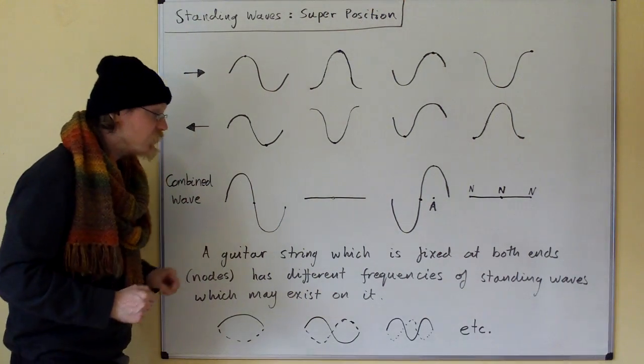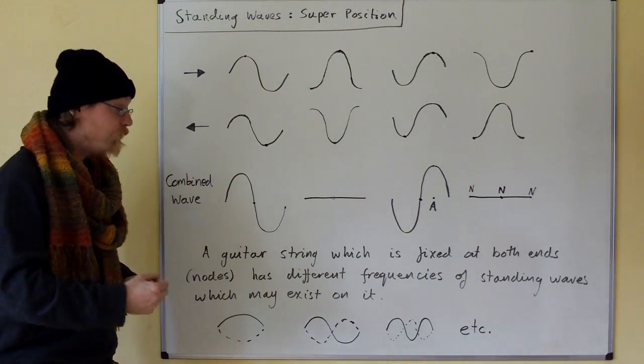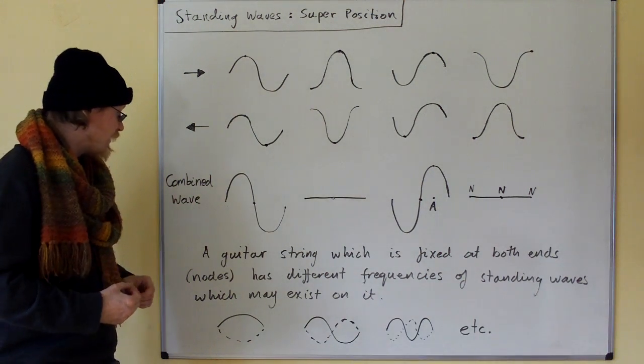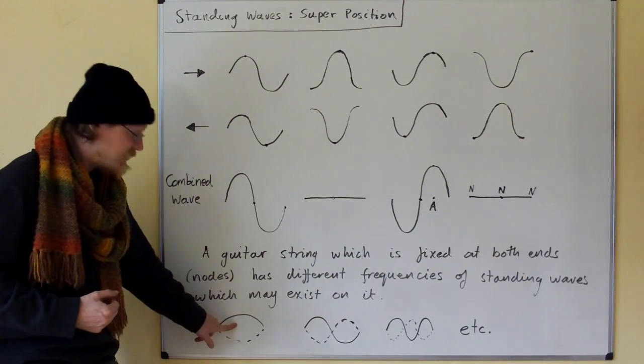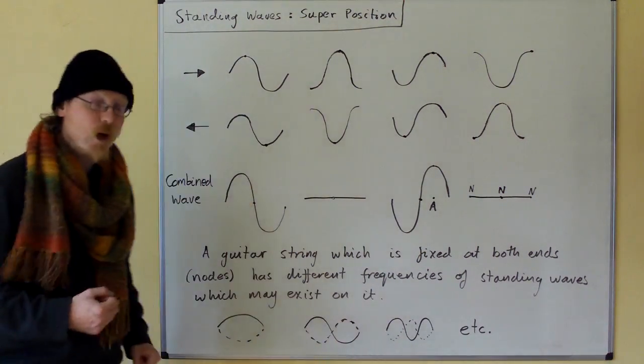A guitar string which is fixed at both ends, which means both ends are nodes, has different frequencies of standing waves which may exist on it. This is the simplest and that's the one you typically use, but these other ones are also possible.